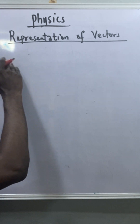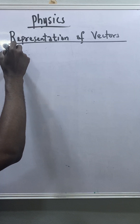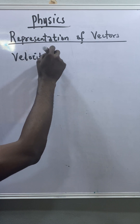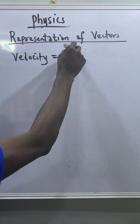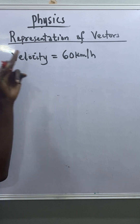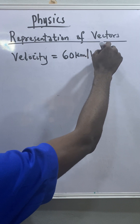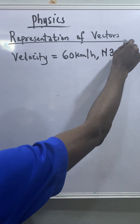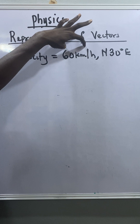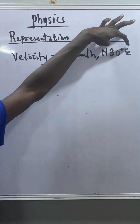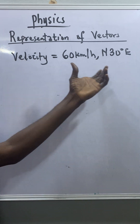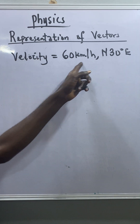For any vector — for instance, if the vector is velocity and the velocity is 60 kilometers per hour — we have to know the direction of this velocity. Let's say north 30 degrees east. So you can see that after writing the magnitude and its unit, we also attach a direction to it. This is how we represent vectors, because a vector is more than ordinary magnitude.